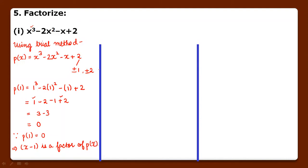For the second step, we have obtained one factor through hit and trial. Now we will divide the given polynomial by x minus 1. We have already learned polynomial division in the Remainder Theorem.